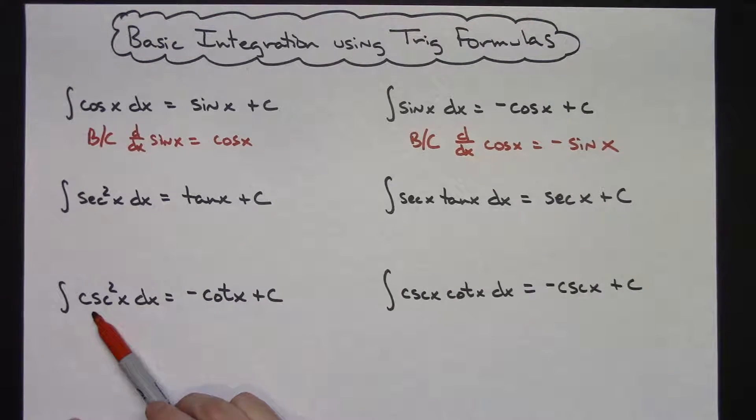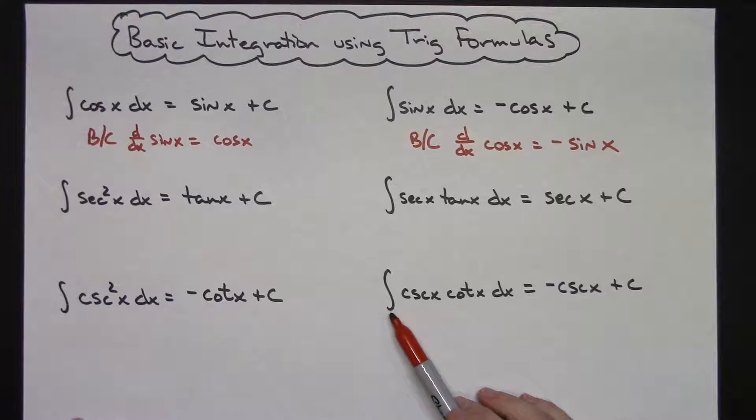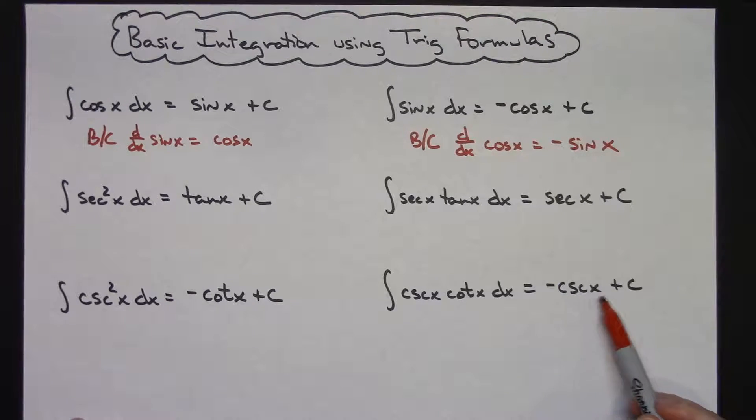When we integrate cosecant squared x dx, we get negative cotangent x plus c. And when we integrate cosecant x cotangent x dx, we get negative cosecant x plus c.